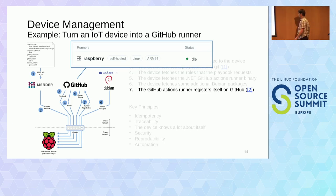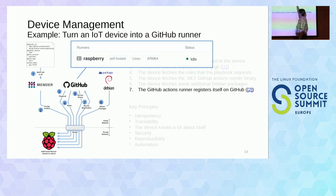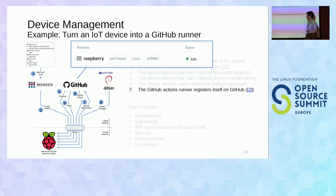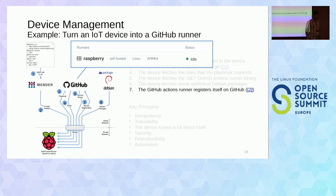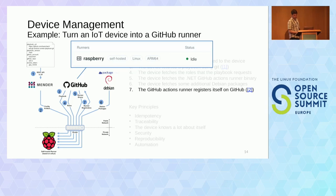The whole playbook that turns my Raspberry Pi 4 into a GitHub Actions runner that knows how to deal with EDI has just two roles: ansible-github-action-runner — pulled from the internet, that's the beauty of Ansible — and my own EDI installer role. Together they install the GitHub Actions runner and enable the device to do EDI commands for building OS images. The runner then registers itself on GitHub and we're ready to use it.